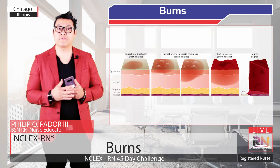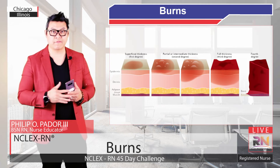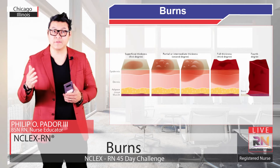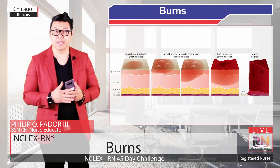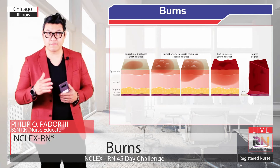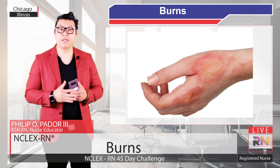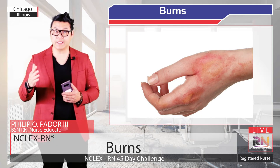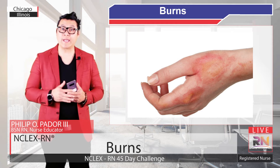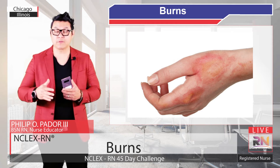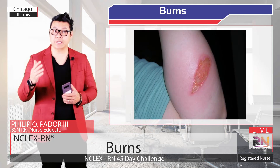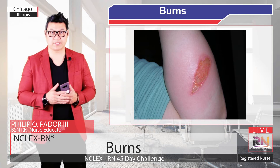The more extensive the area of collagen damage, the more extensive the scar. Scars are common in second degree deep partial thickness burns and third and fourth degree burns. Symptoms of the burn depend on the degree. In first degree burns, the affected area becomes red, dry, and painful. These areas also tend to blanch, turning white as blood flow is restricted with compression.